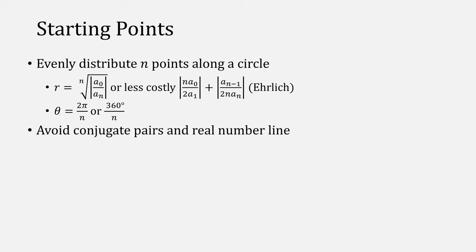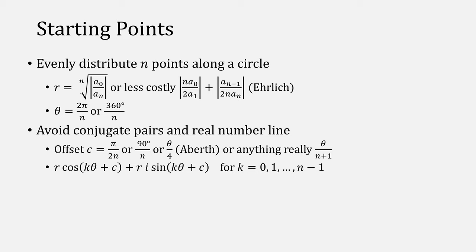You'll also want to avoid conjugate pairs and the real number line, so Aberth recommends adding an offset to theta such as pi over 2n. Then, what you're left with is this equation for each starting point. Or you can use Euler's formula to simplify it to this.